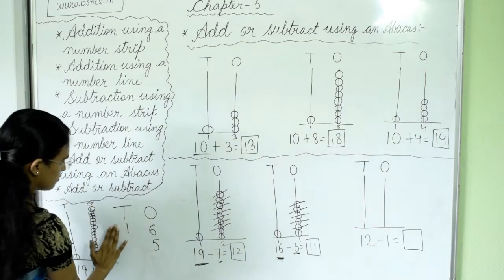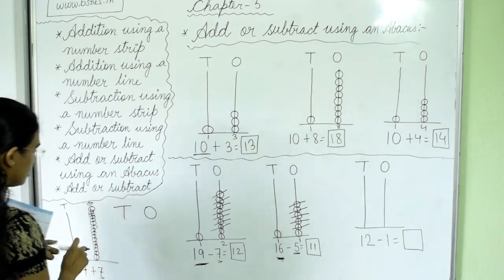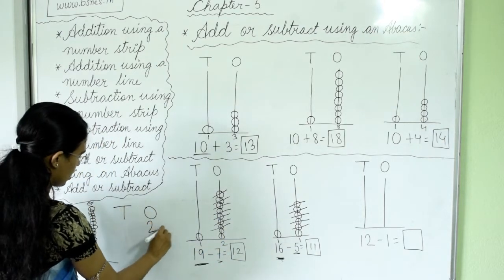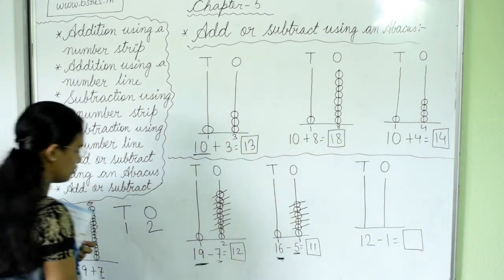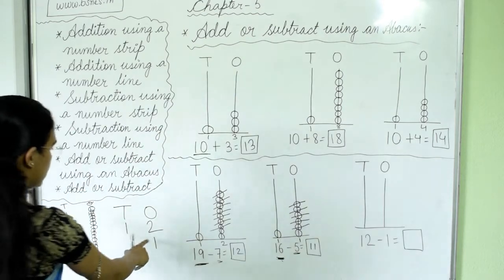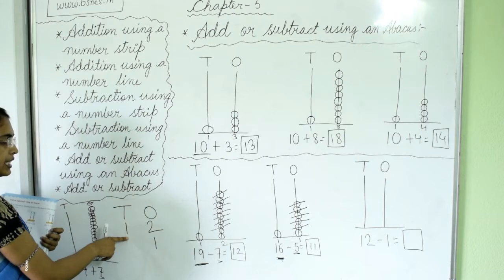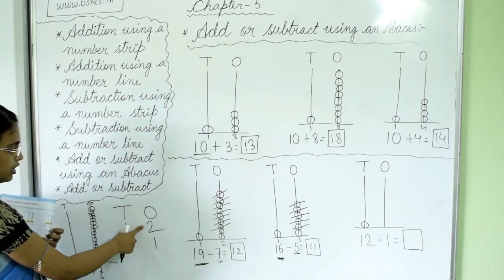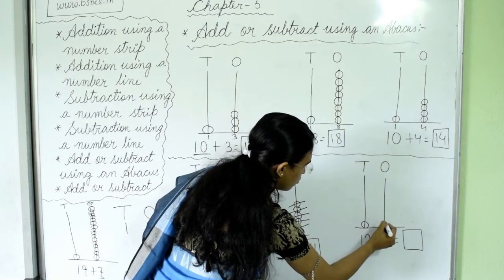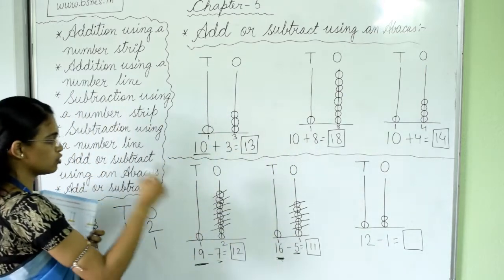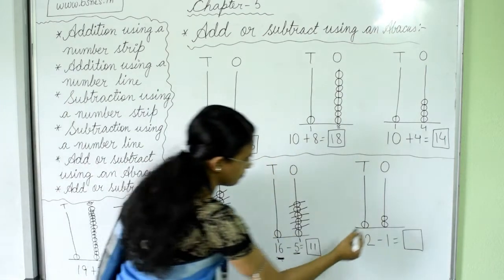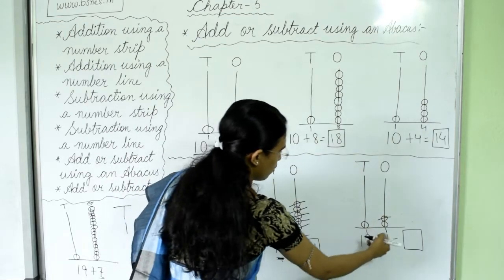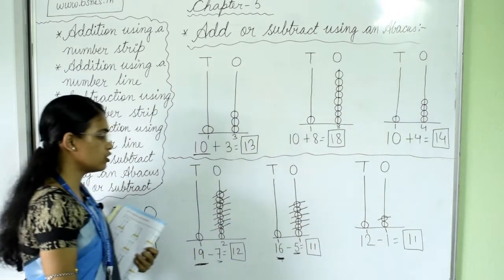Next question is 12 minus 1. Put the number in tens and ones place: 1 in tens, 2 in ones. Subtract 1 — one digit, so in ones place. Draw one bead in tens and two beads in ones: 1, 2. Cut 1 bead from the two. One bead left in ones and one bead in tens — that is 11. So 12 minus 1 equals 11.